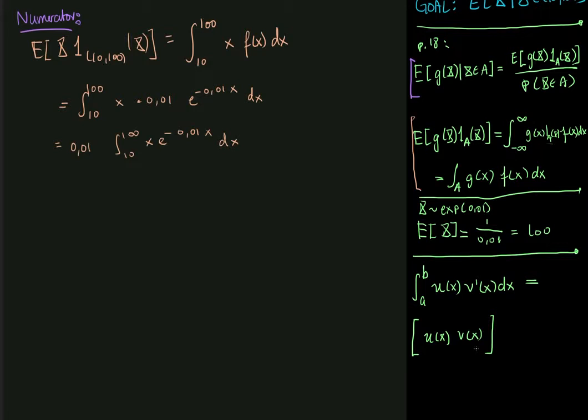And then minus the integral from a to b over u prime of x, so u differentiated multiplied by v not differentiated dx. Now all of you might have different expressions for this depending on where you learned this formula. But this is my version of it, which I always get from wikipedia.